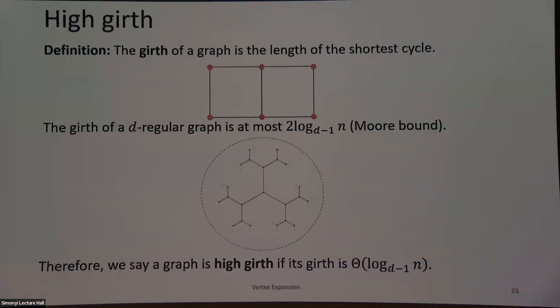I want to quantify the length of the shortest cycle — the girth of the graph. The girth is just the length of the shortest cycle; here it's four. The girth of a graph is always at most 2 log_{D−1}(N). To see this: starting from a vertex, at distance one there are D vertices, distance two there are D(D−1), and every further step multiplies by D−1. Since we have N vertices, after log N steps we must hit every vertex. So we want a high-girth graph — one where the girth is of the same order as this Moore bound.